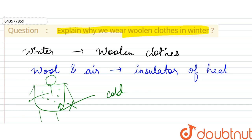Being an insulator of heat doesn't only mean it blocks heat from outside; it won't allow the colder temperature to pass through either. So it won't allow heat transfer in either direction — neither from inside to outside, nor from outside to inside. That is why we wear woolen clothes in winter.